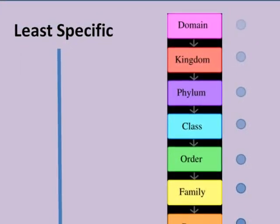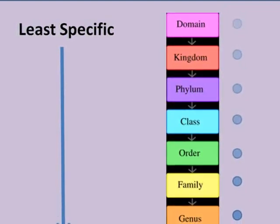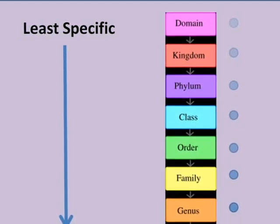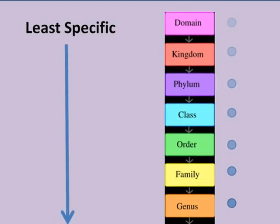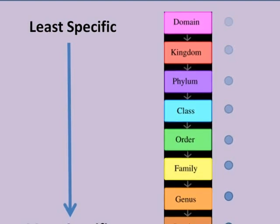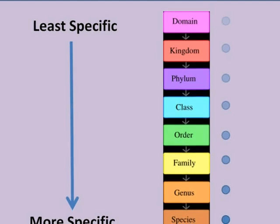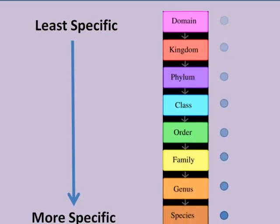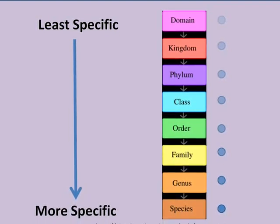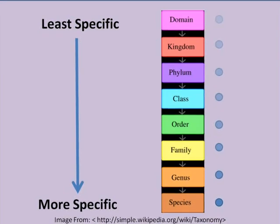Classification is the way scientists group organisms based on how closely they are related to one another. With plants, scientists look at the external and internal parts of a plant, just as we did for identifying them. However, for classification, they focus on the similarities and differences among different plant species, and usually observe the flowers and fruits the most. Today, scientists often use similarities and differences in DNA sequences to determine relationships among plants, but for our purposes we will focus on similarities and differences in plant structure.